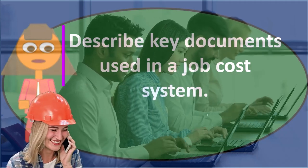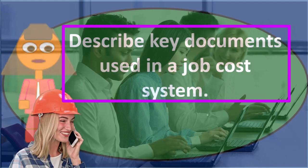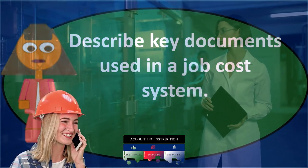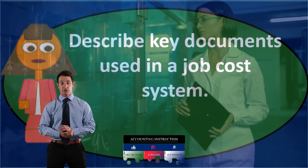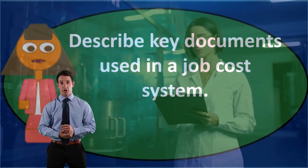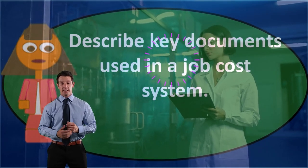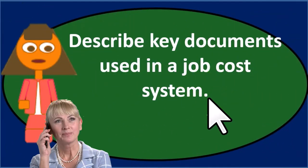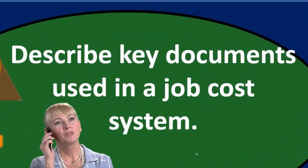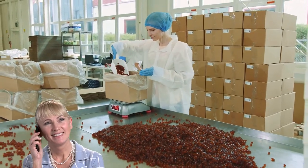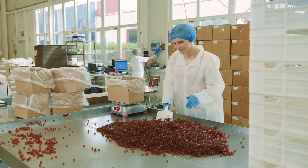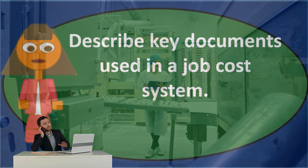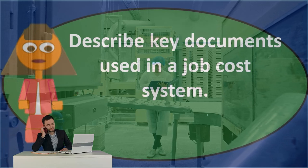We might be able to pick up some points by just considering what a job cost system is, even if we're not really clear on all the documentation for it. A job cost system is typically one of the two types of cost tracking systems used in a production company. It's typically used when we're producing things that are somewhat customized and different in nature — we're not making all the same units. It could also be used in a service company when we have types of jobs that are different.